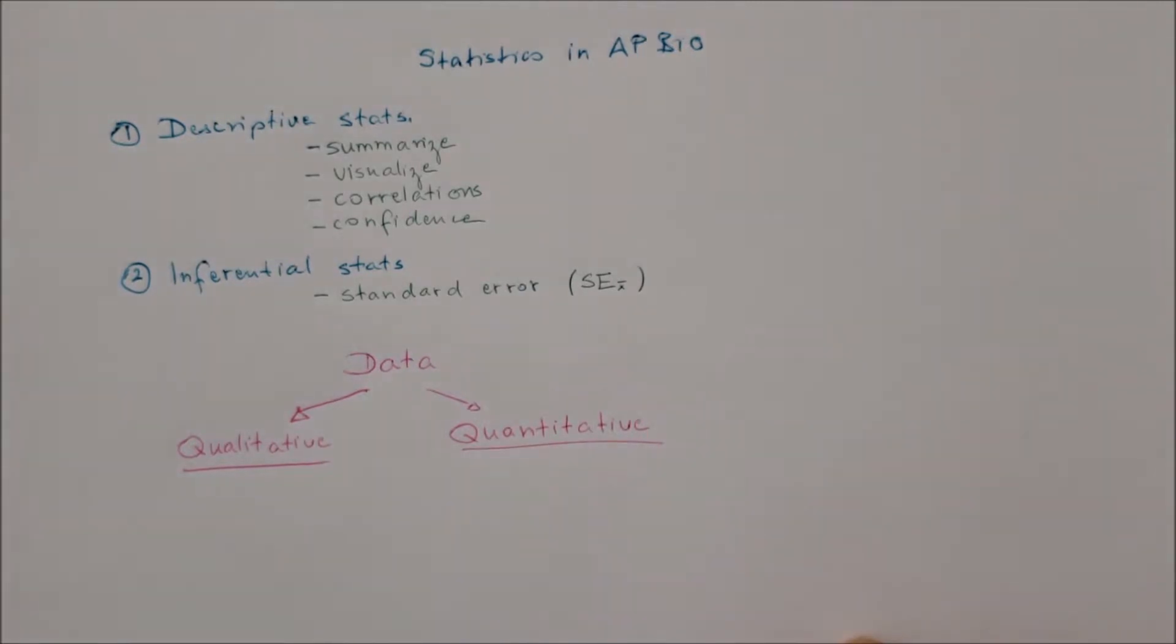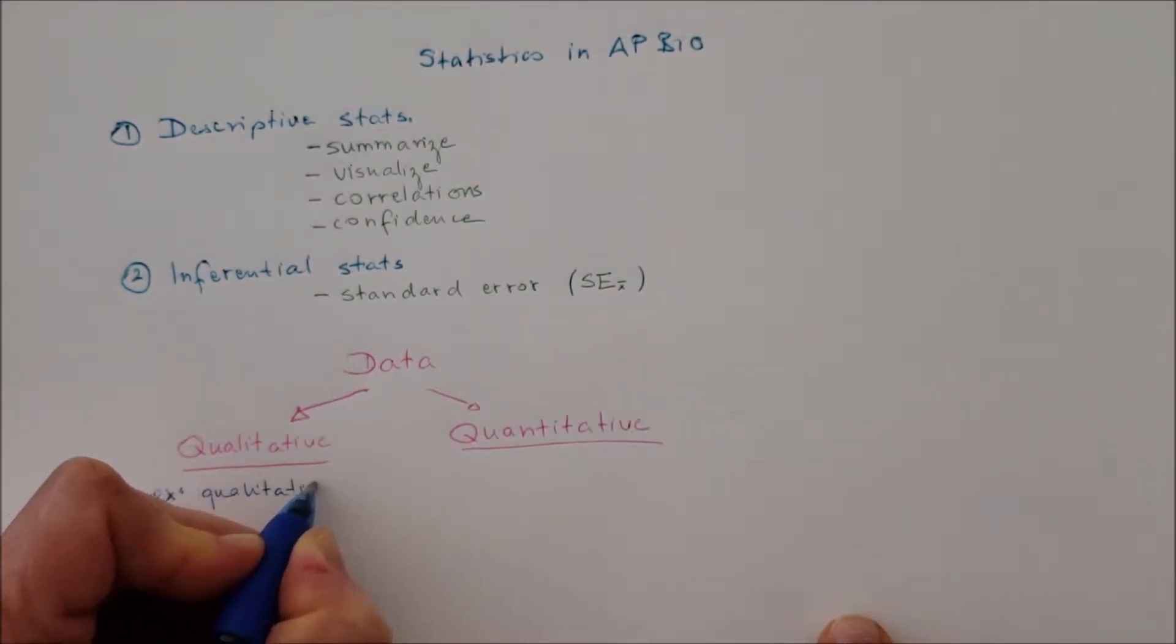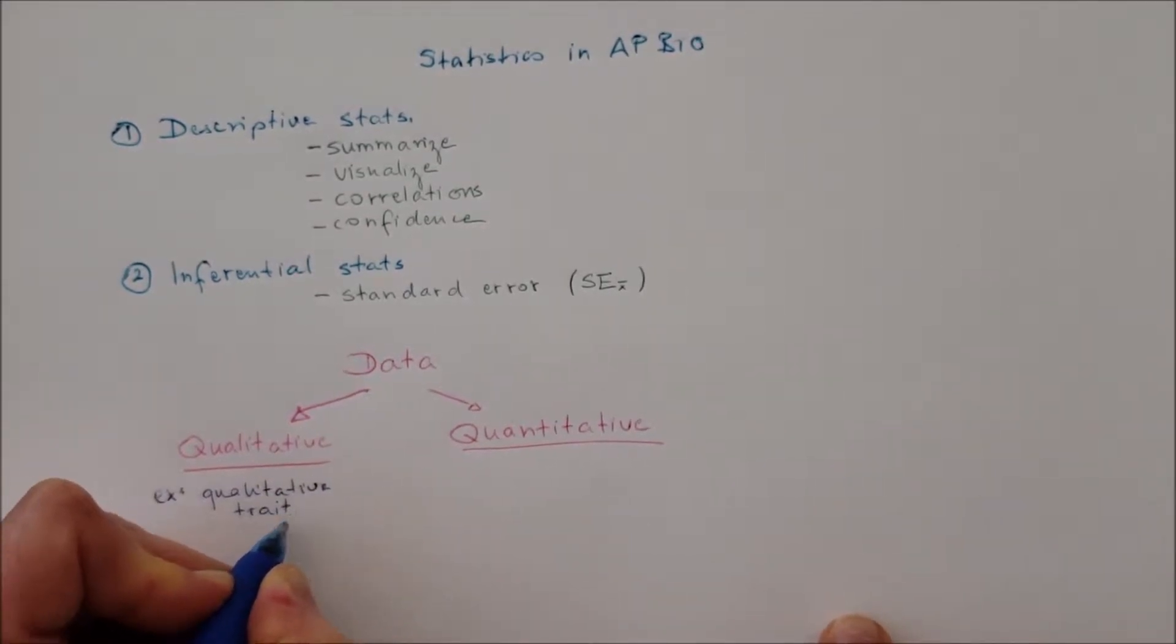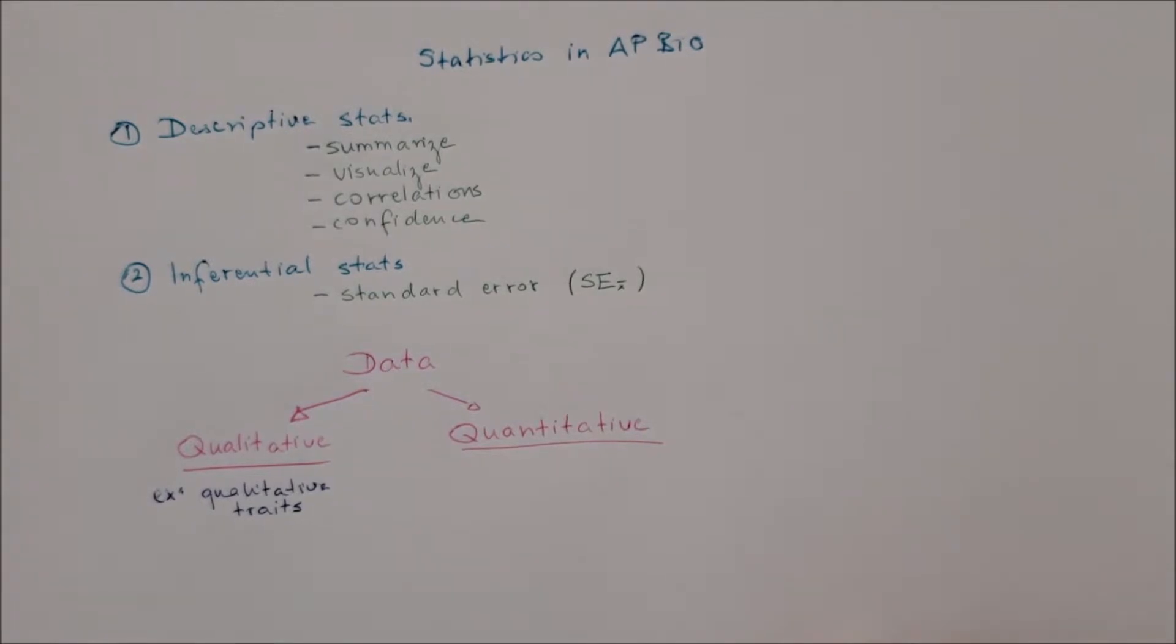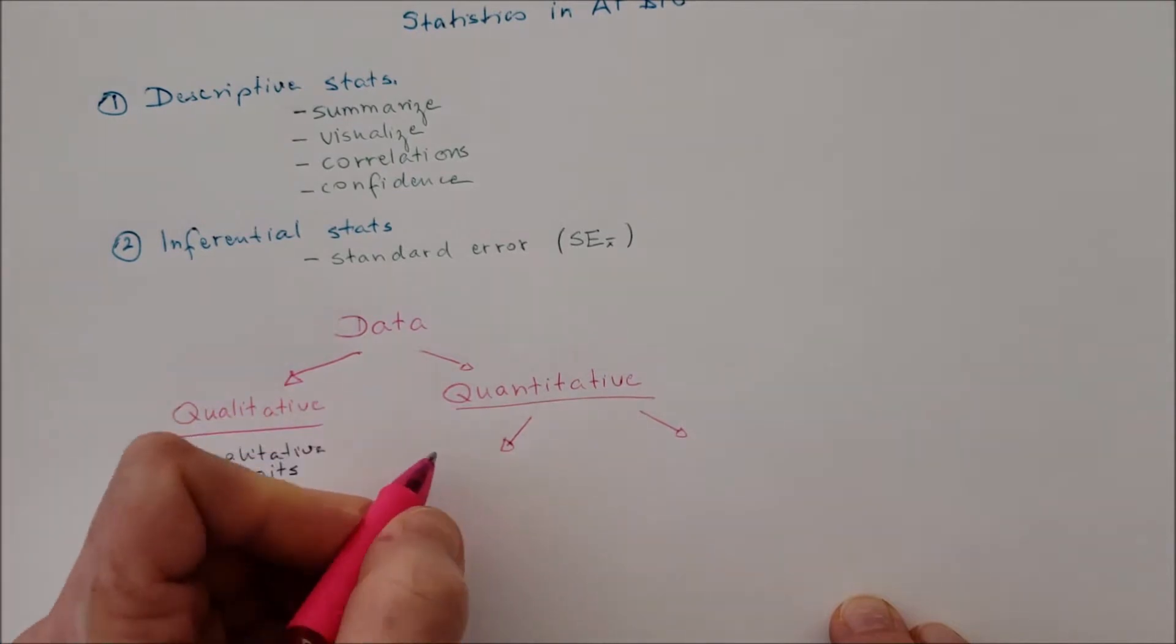The qualitative data, for example, male and female, whether it's how soft the cat is, basically based on qualitative traits.